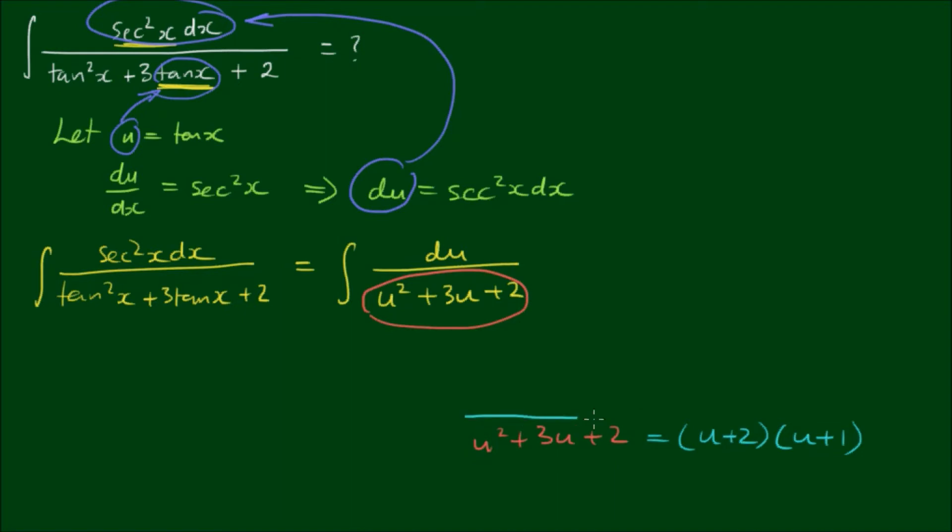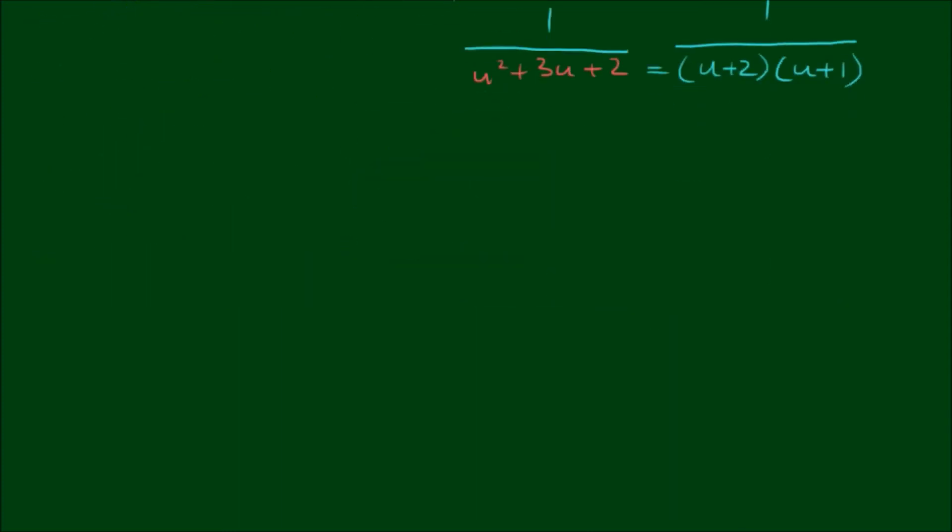Okay, so with the fraction 1 on u squared plus 3u plus 2, it's equal to 1 on u plus 2 by u plus 1. Okay, now let me relocate this to the left of the screen. So we can break this up into partial fractions. We can rewrite 1 on u plus 2 by u plus 1 as A on u plus 2 plus B on u plus 1.